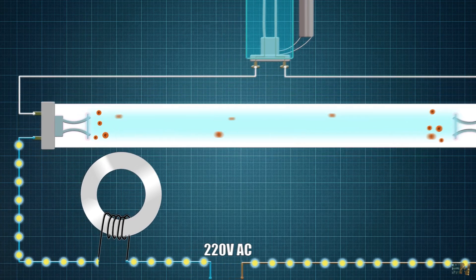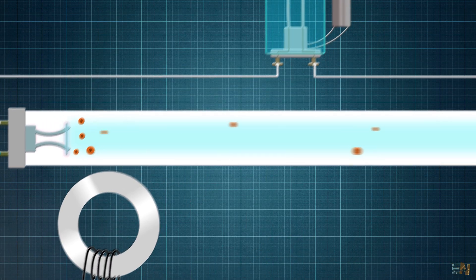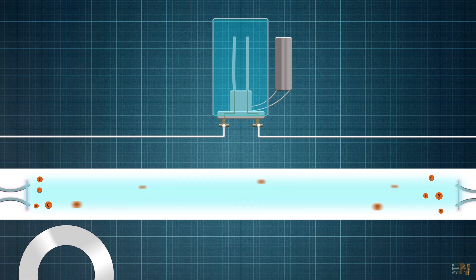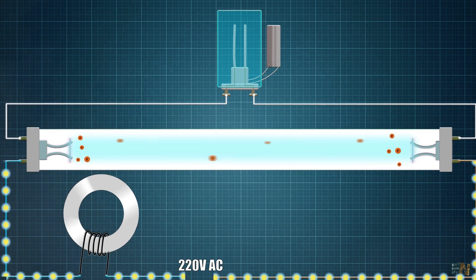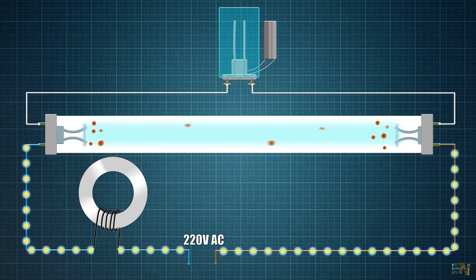Also once the current is flowing, the ballast acts as an impedance in series, so it will lower the voltage on the starter, so it won't flicker anymore. That's why we need the starter and the ballast coil and that's why at the beginning the old fluorescent tubes were blinking a few times till the current path was created.